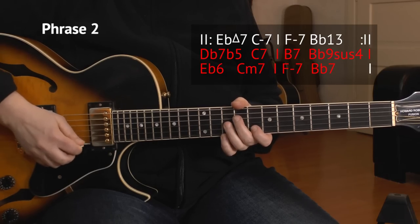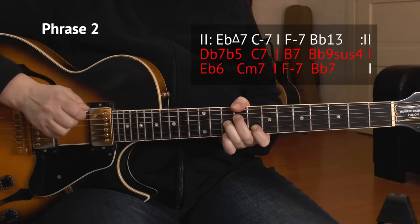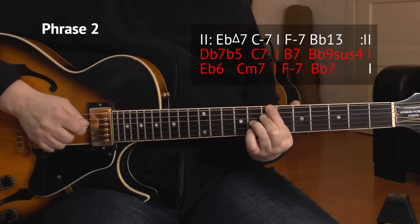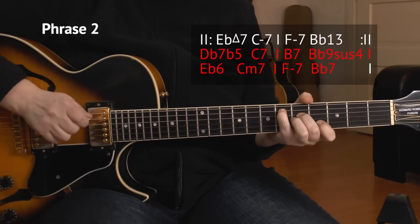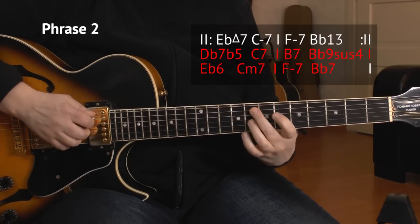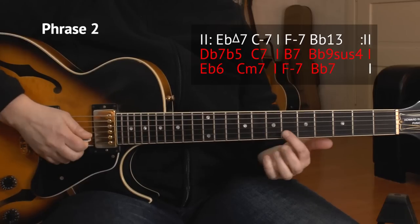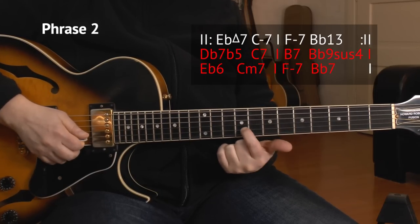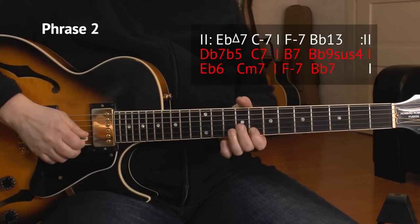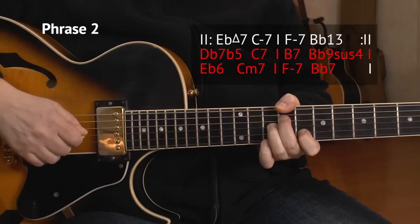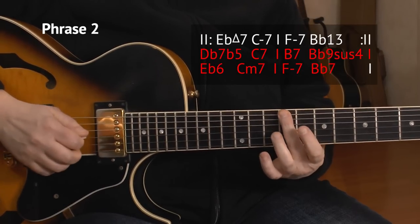And here is phrase number 2, let me play it fast for you first, so you can hear what it sounds like. Alright, we start on the B-string, because we were here on the 6th fret, now we move up to the 8th fret, and we shape a Db7b5 chord around it, that sounds complicated.